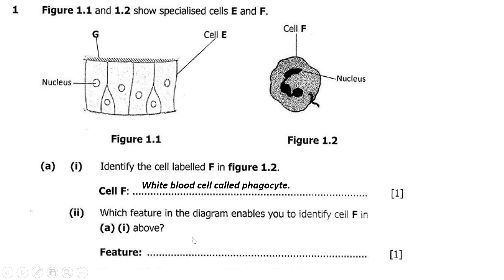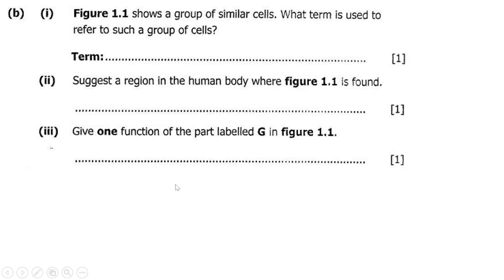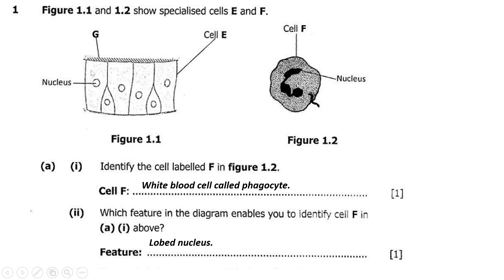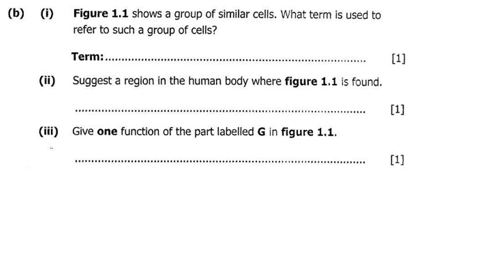Part B, Roman numeral one says figure 1.1 shows a group of similar cells — what term is used to refer to such a group? This is a group of four similar cells, all alike. The term used to refer to such a group of similar cells is a tissue.